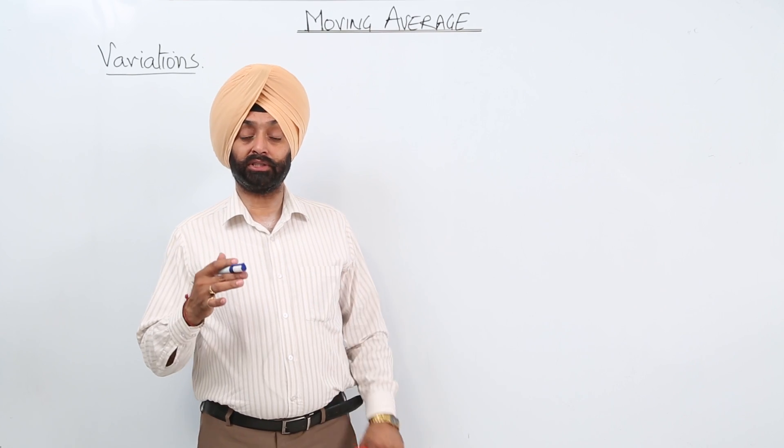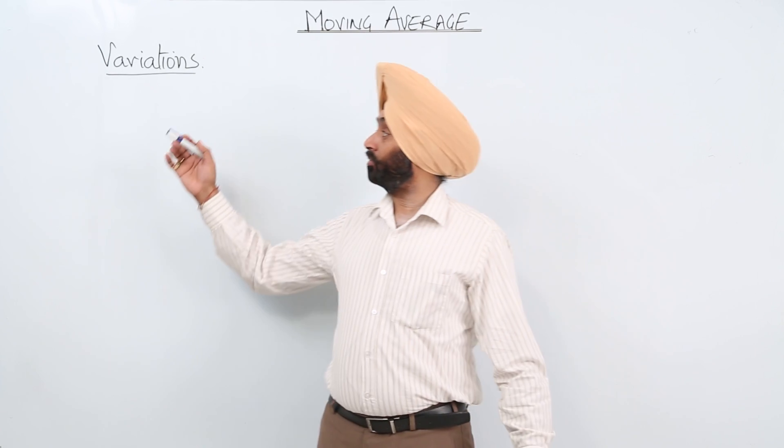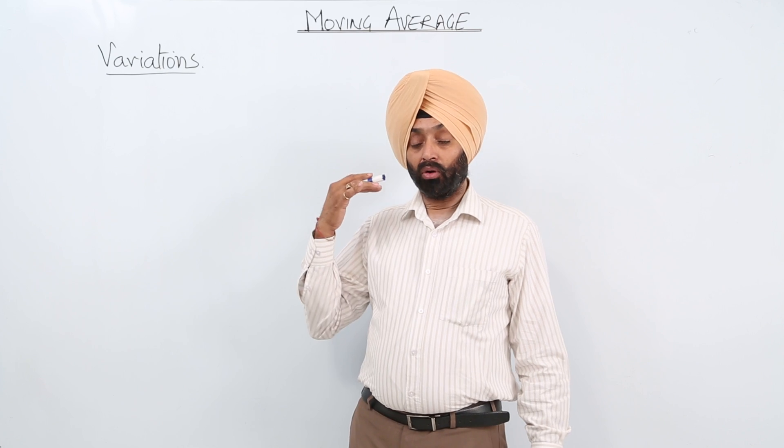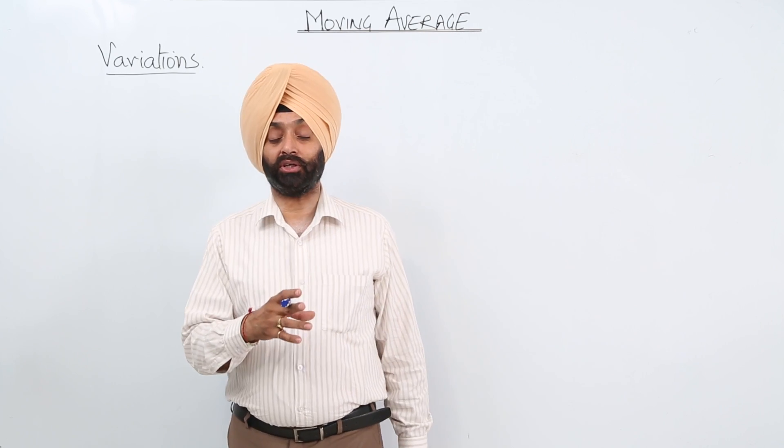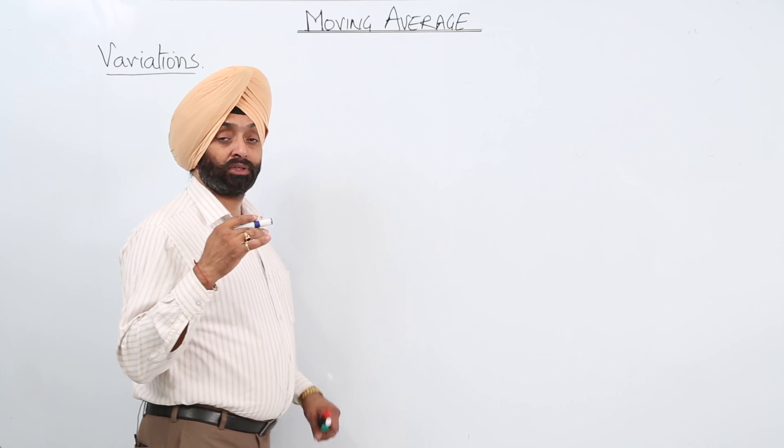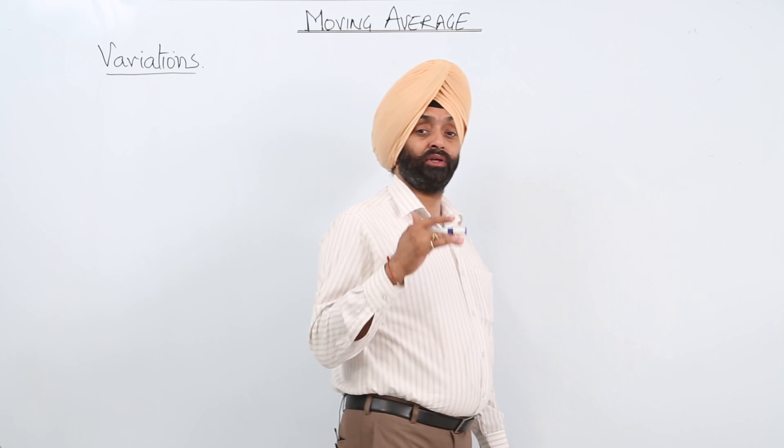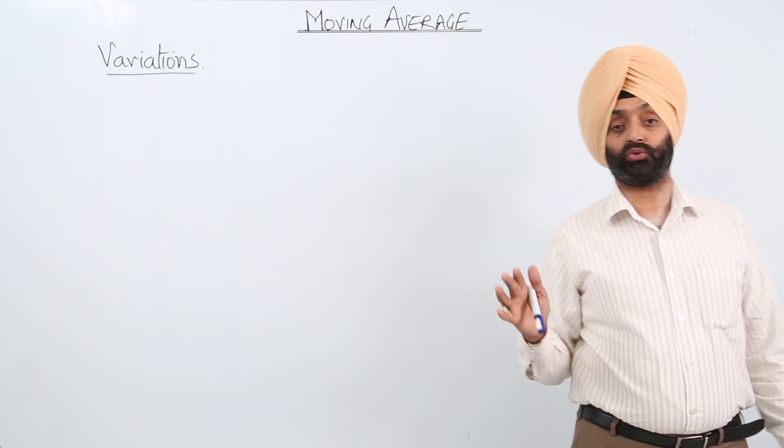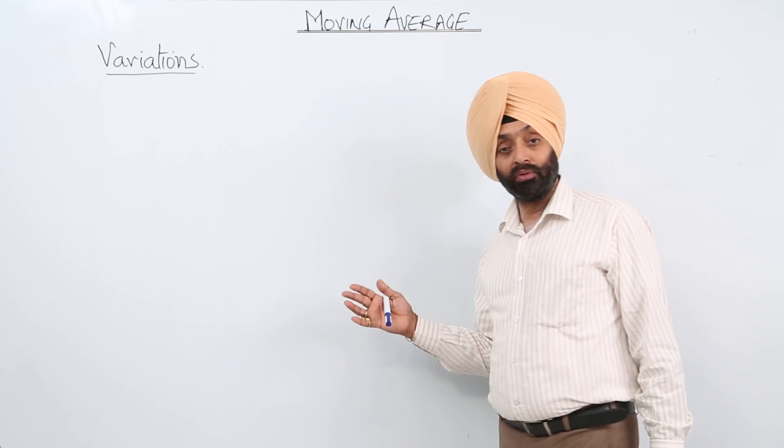Next topic we are going to discuss is about variation. Now variation, oscillations, fluctuations - we can use any of the terms. So basically for the topic moving average we are having three or four types of fluctuations, three or four types of variation.